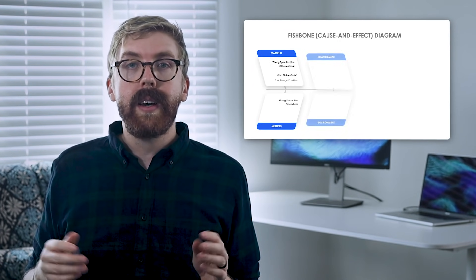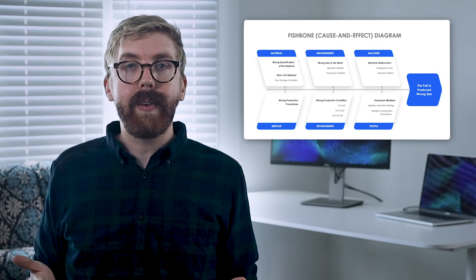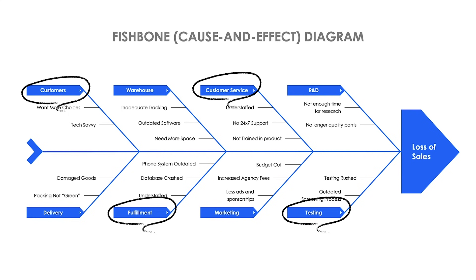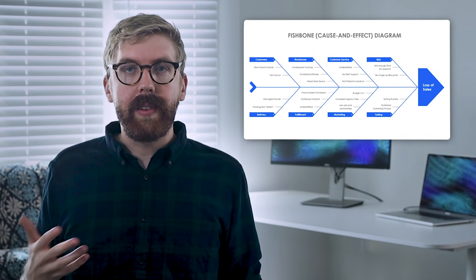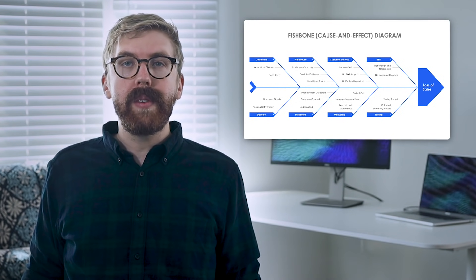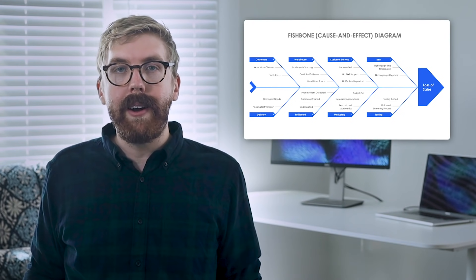To identify root causes, you can use a fishbone diagram, also called a root cause and effect diagram. A fishbone diagram begins with a problem statement written on the right, or the head of the fish. Contributing causes are added to the bones of the fish, with smaller bones branching off from the larger issues to add additional context. Once all the contributing factors are listed, this root cause discovery analysis can be used to compile the results and weigh them according to their relative importance with another decision-making tool like Pareto.